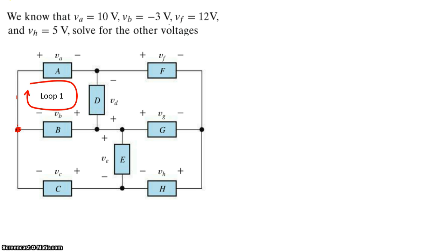As I take a walk along this loop, the first sign I encounter in loop one is a positive sign, and the magnitude of that voltage is VA. So let's write that expression out as plus VA. As I move along that loop, the next thing I encounter is element D and a negative sign first, so minus VD.